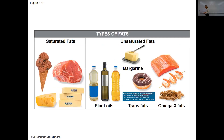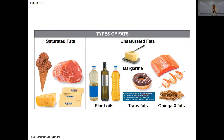Looking at types of fat: saturated on the left are all from animals; unsaturated fat on the right includes plant oils and omega fats. One type of unsaturated fat is actually called trans fat, and it's made in the lab — it's an artificial fat.